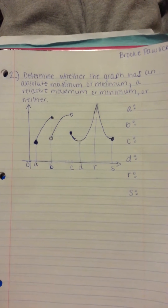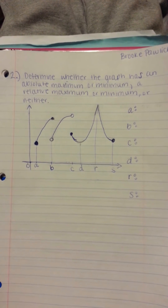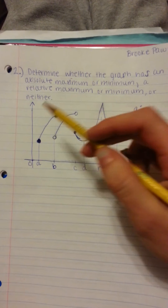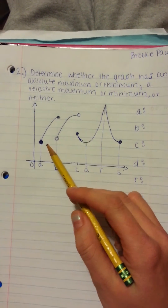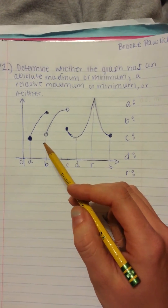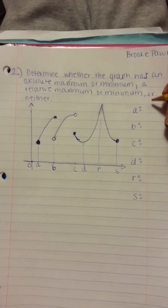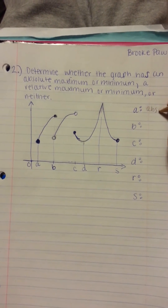Starting with point A, we can tell that it's a minimum by looking at it. And since it's the lowest value on the graph, we can go ahead and call it an absolute minimum.